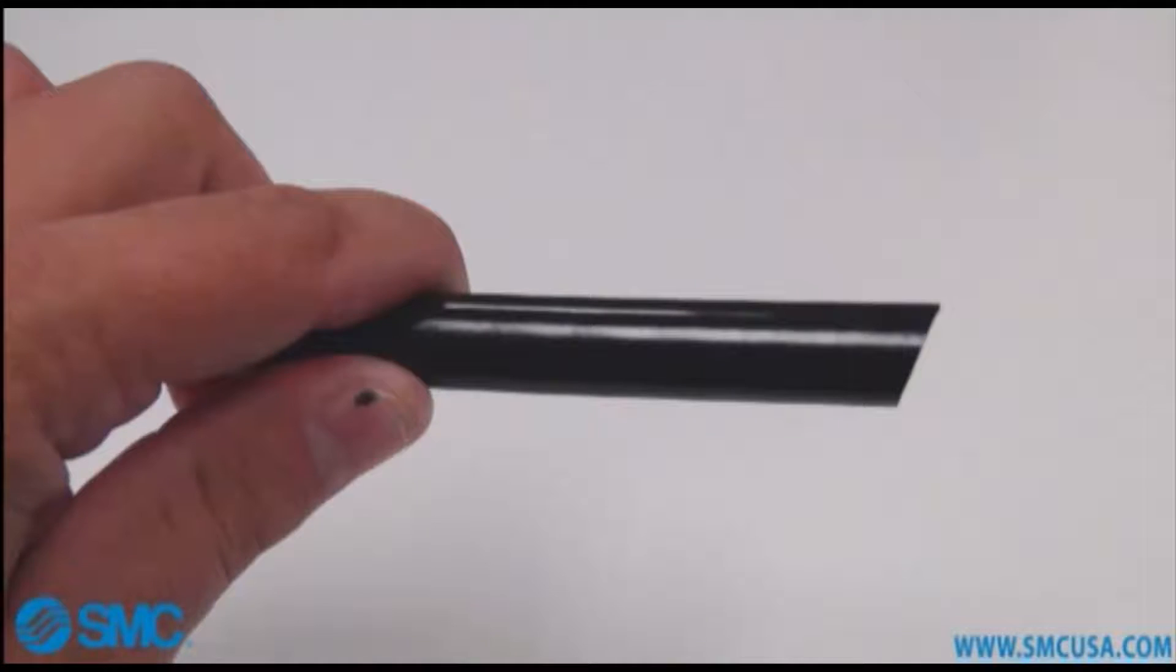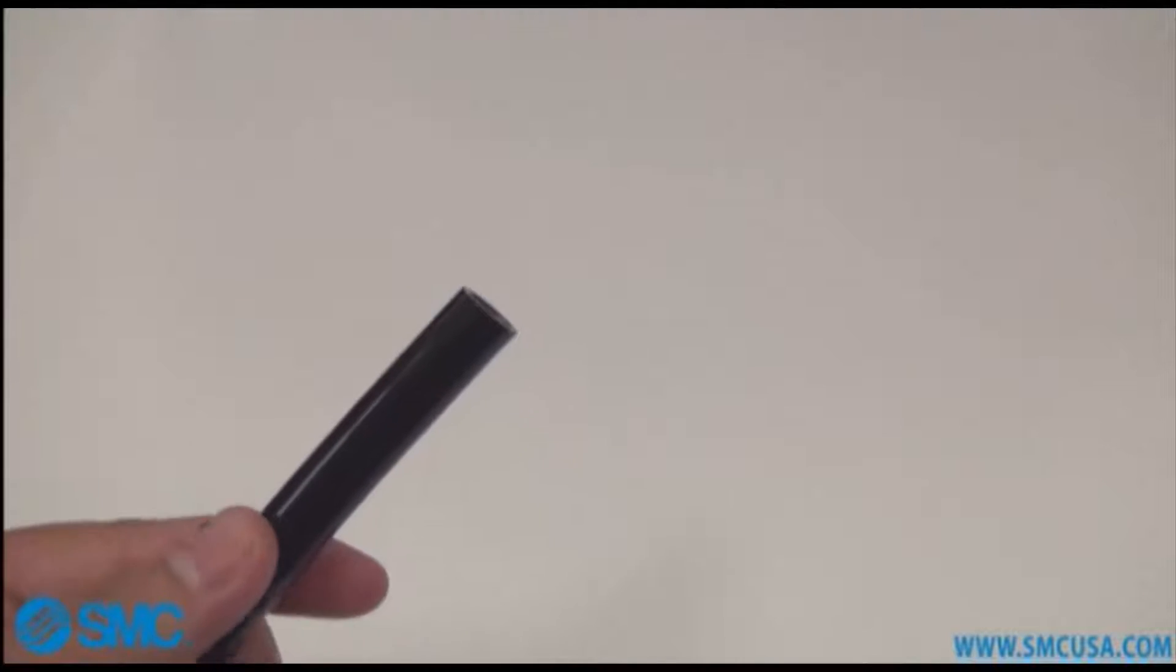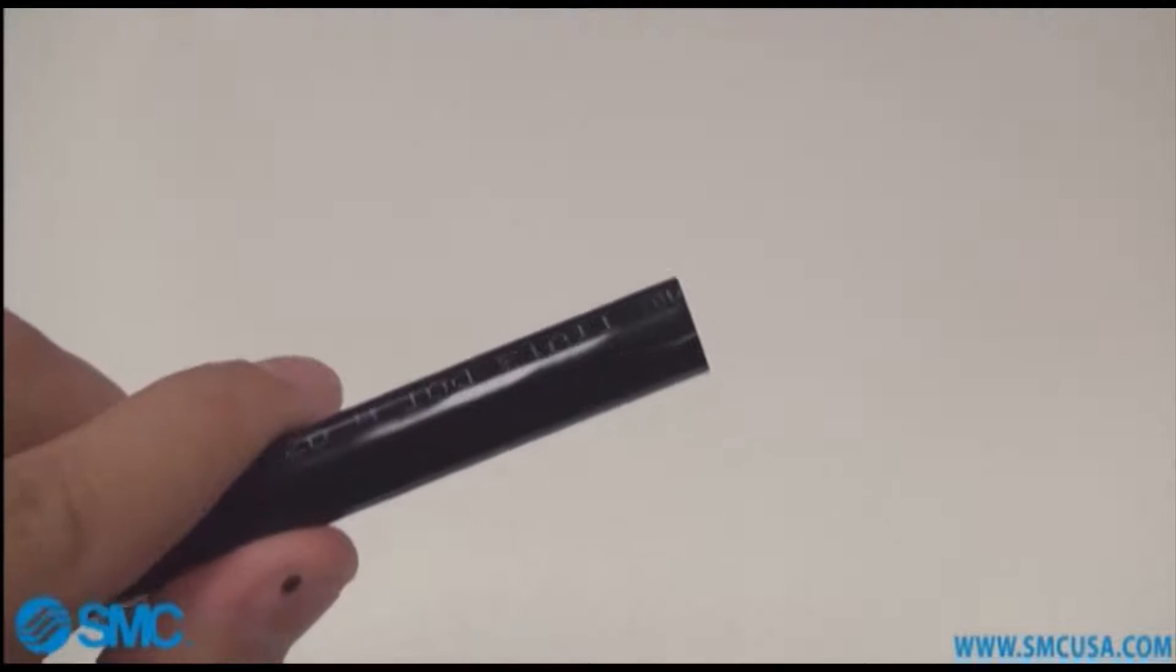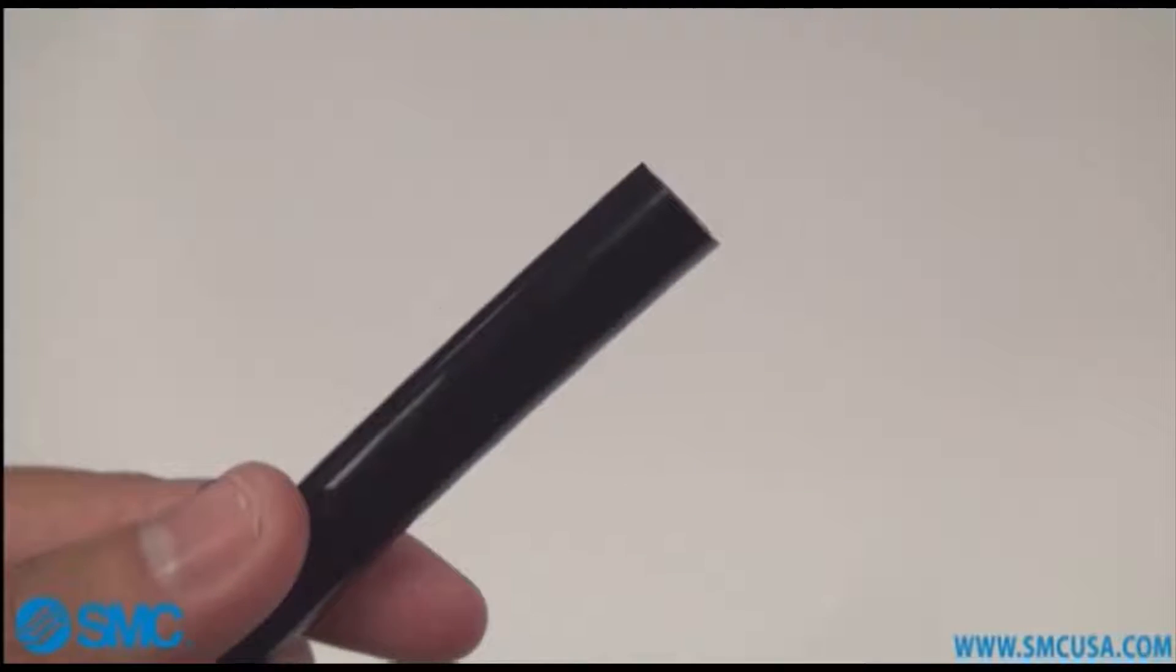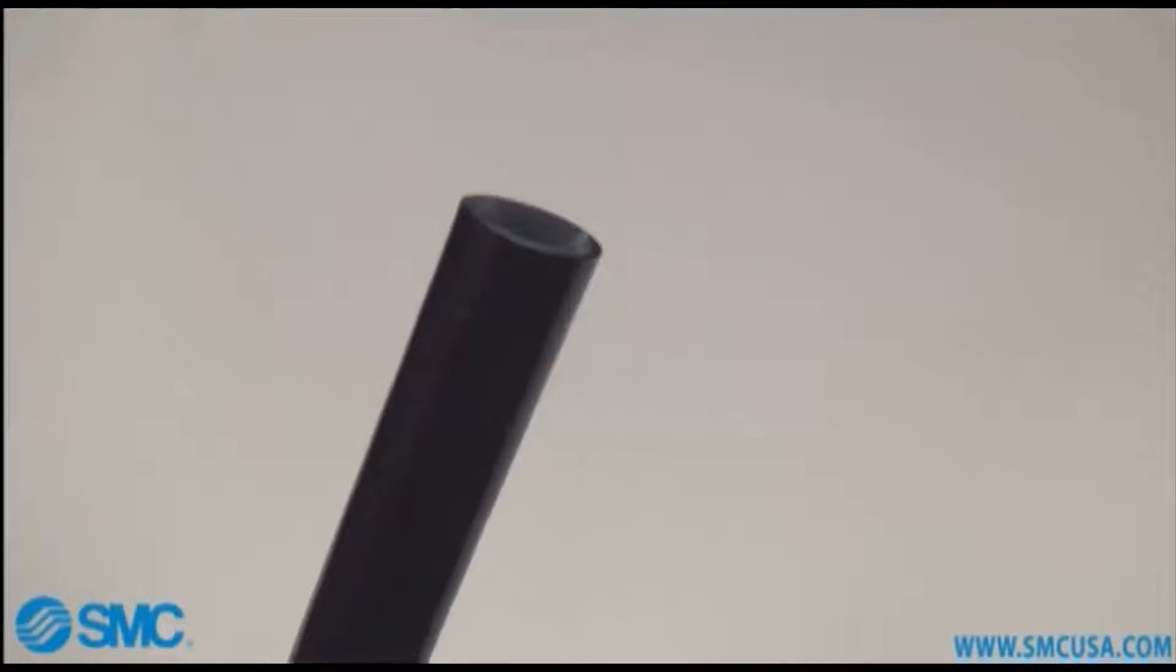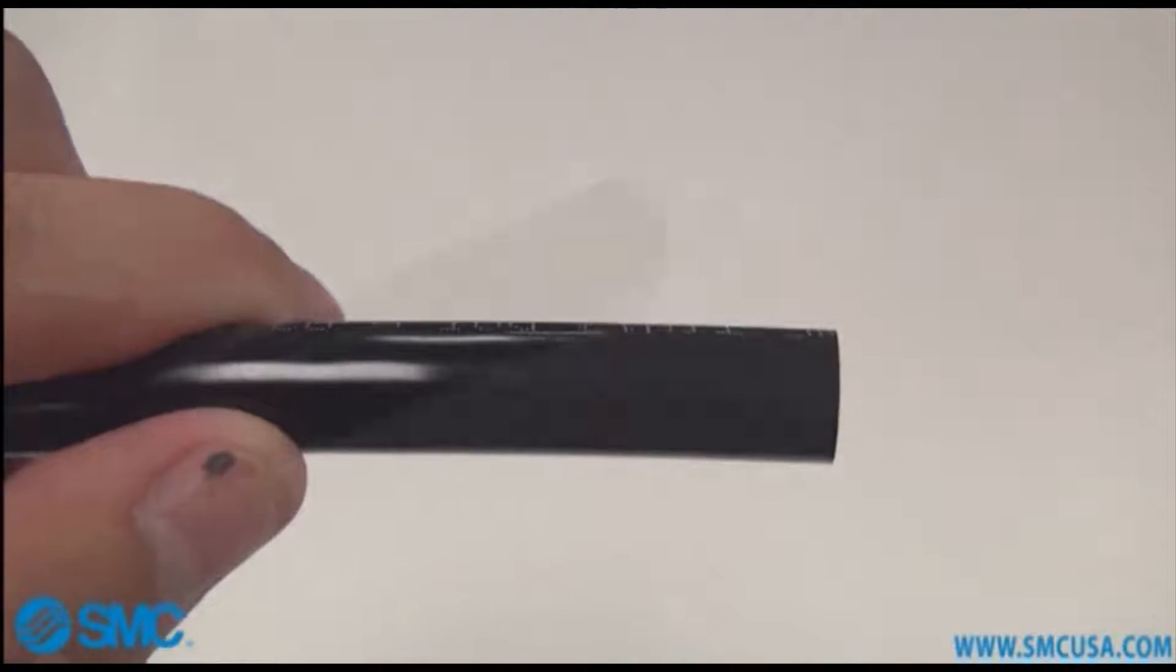Here we have a piece of TIV series tubing. It is important to closely inspect the tubing to make sure that there are no visible scratches on the end of the tubing. You should also make sure that the tubing is cut square before inserting the tubing into the fitting.